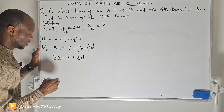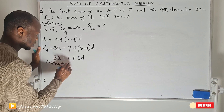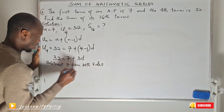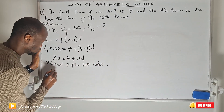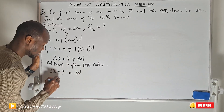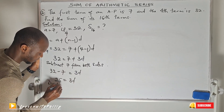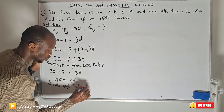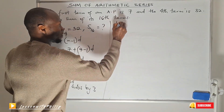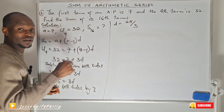Subtracting 7 from both sides: 32 minus 7 equals 3d, so 25 equals 3d. Dividing both sides by 3, the common difference equals 25 over 3. Since 3 cannot go into 25 evenly, we leave it as a fraction.